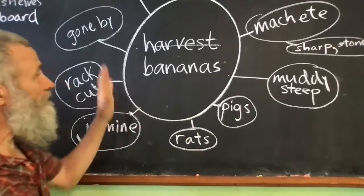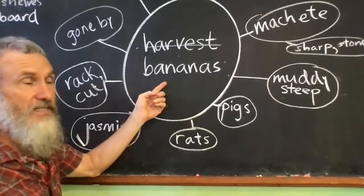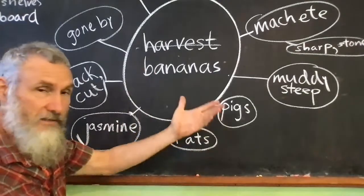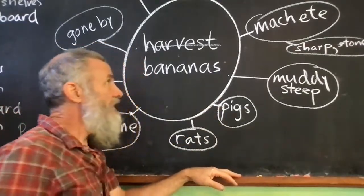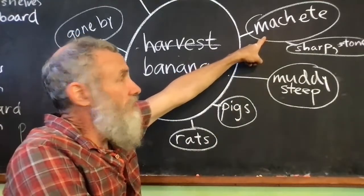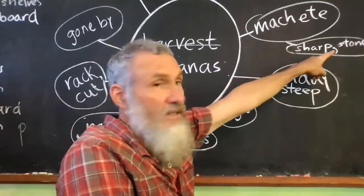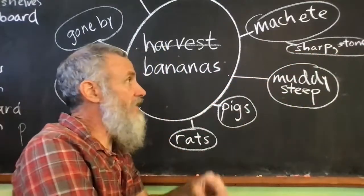So right there, I have many sentences. I might say, last weekend I harvested bananas, period. Okay. Starting with a capital letter and ending with a period, of course. And then I might say, I used my machete, period. But first I had to sharpen it with the stone. There's another sentence, right?